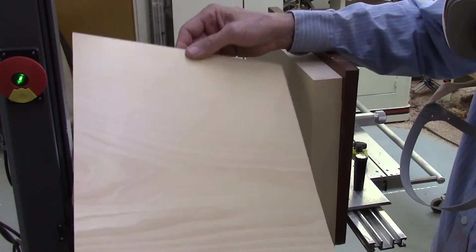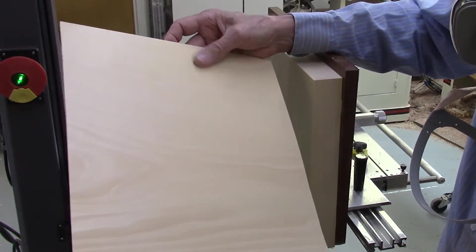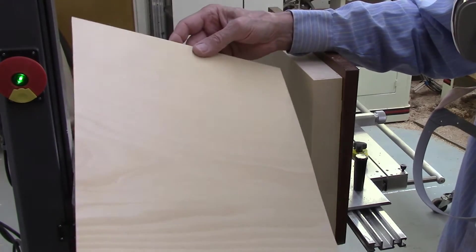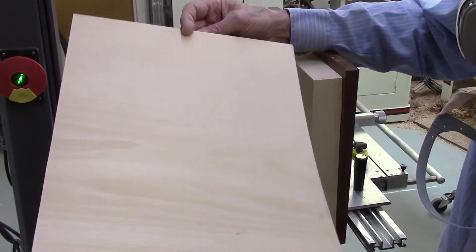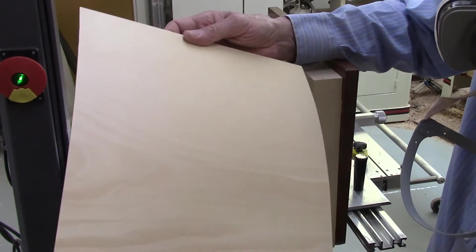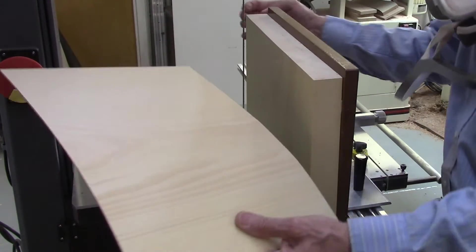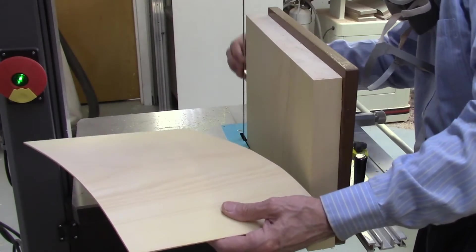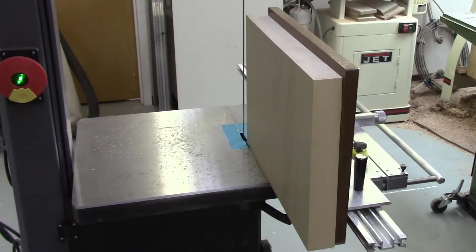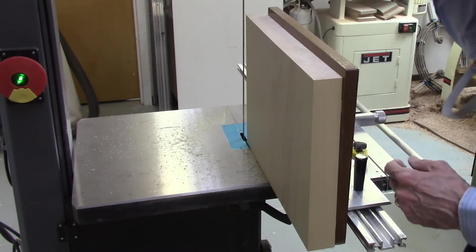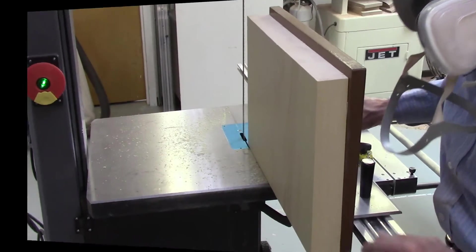That board cut amazingly smooth. I was surprised. There's no saw marks in that at all. And I don't have any gumming up in my blade yet either. So this blade may work fine with this particular piece of wood. I don't think it would work as well on something like padauk, but it worked pretty good here.